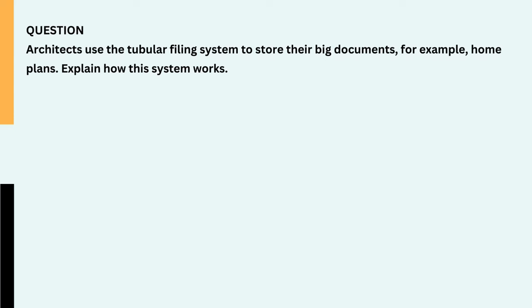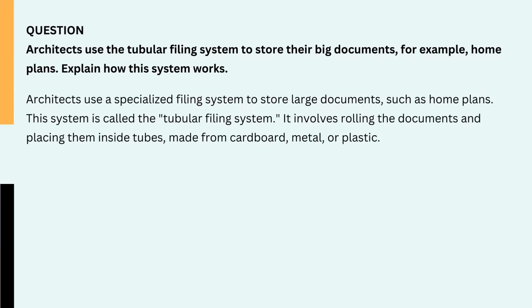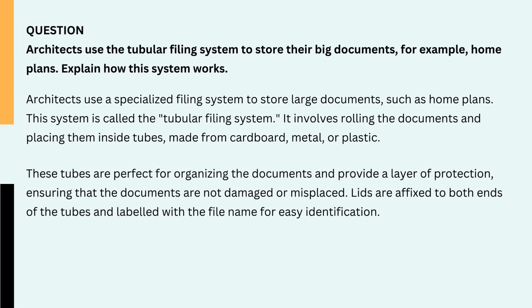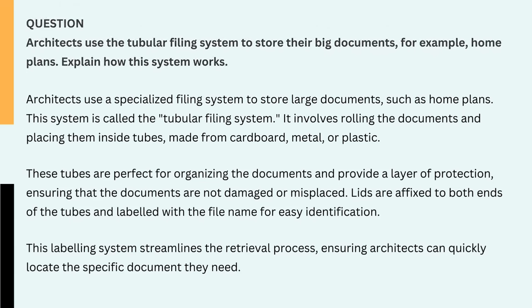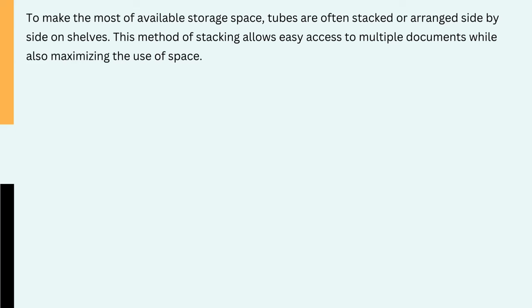Question: Architects use the tubular filing system to store their big documents, for example, home plans. Explain how this system works. Architects use a specialized filing system to store large documents such as home plans called the tubular filing system. It involves rolling the documents and placing them inside tubes made from cardboard, metal, or plastic. These tubes not only help organize the documents but also provide a layer of protection, ensuring that the documents are not damaged or misplaced. Lids are affixed to both ends of the tubes and labeled with the file name for easy identification. This labeling system streamlines the retrieval process, ensuring architects can quickly locate the specific document they need. To make the most of available storage space, tubes are often stacked or arranged side by side on shelves.